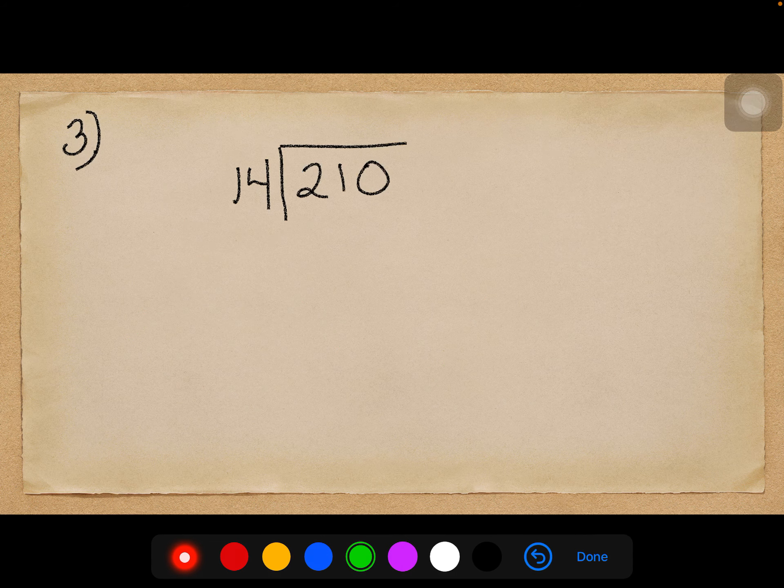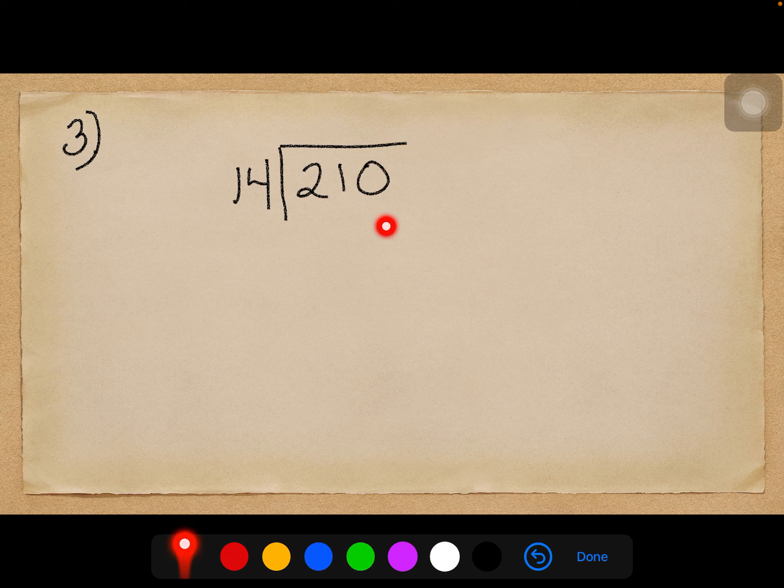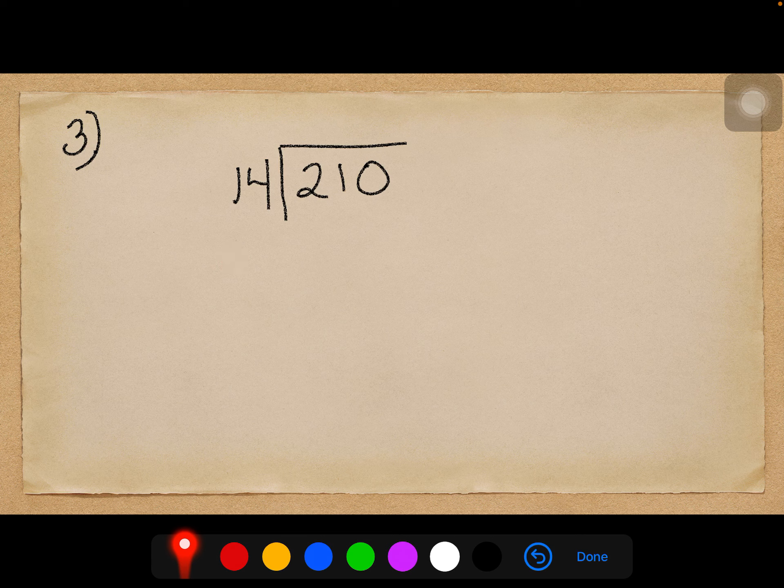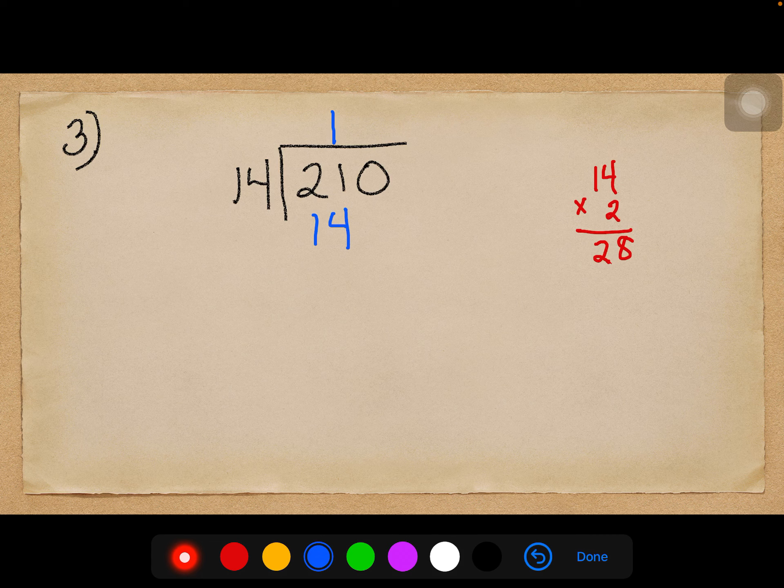Alright, number 3 says 210 divided by 14. On my multiplication chart, I don't have a factor of 14. So I'll need to do some of that work on my own. So I'm first going to be looking at how many 14's are in 21. Well, that's easy. I think it's 1, but let me double check and do some trial and error over here. Yeah, 2 14's is 28, so that's too many. So 1 times 14 is 14.